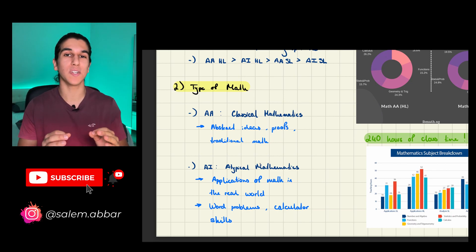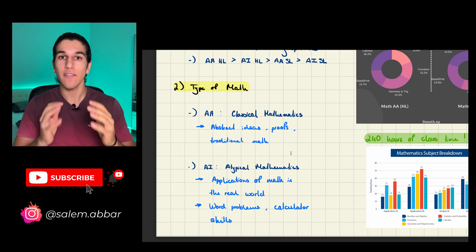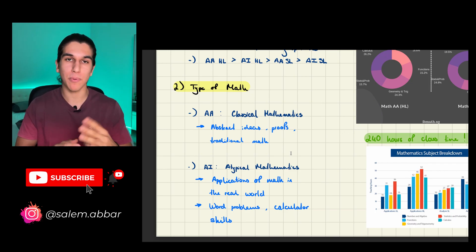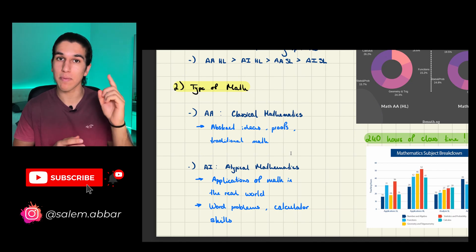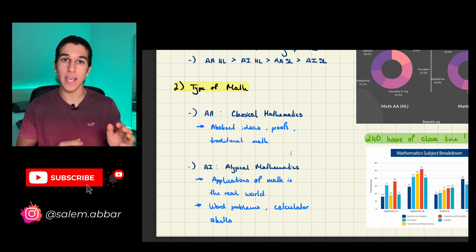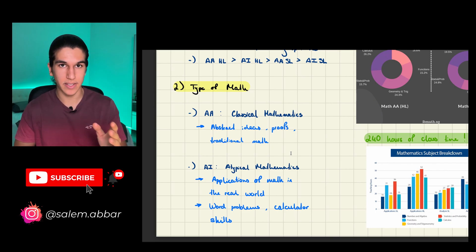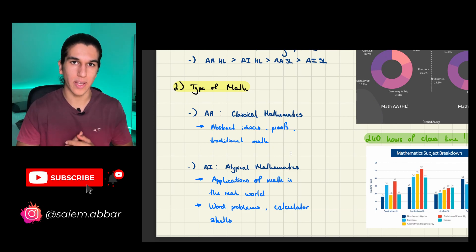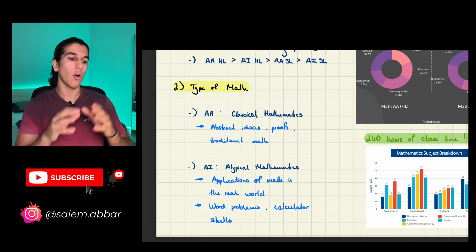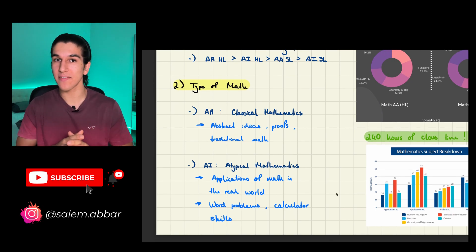In terms of assessments: if you take HL, you have Paper 3 in both cases; if you take SL, you have Papers 1 and 2 in both cases. For AA, Paper 1 is without a calculator, Paper 2 is with a calculator, and Paper 3 (if you take HL) is with a calculator. For AI, all three papers include a calculator.